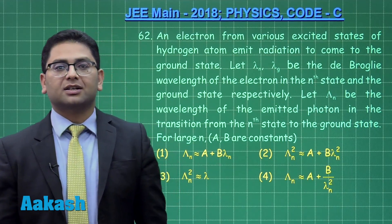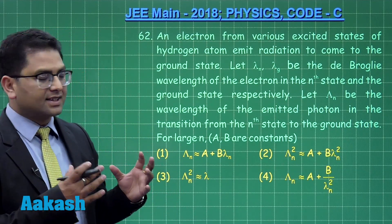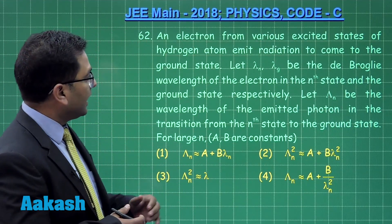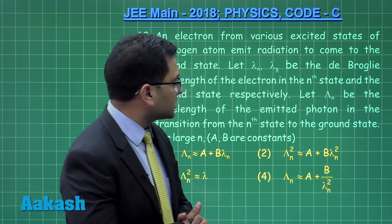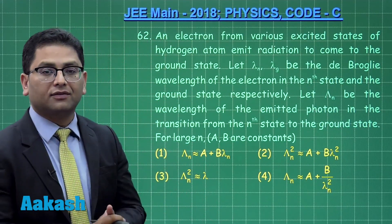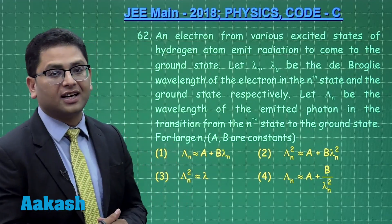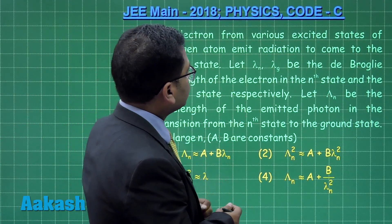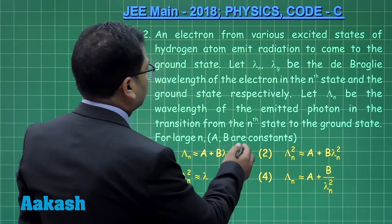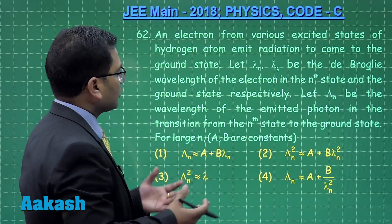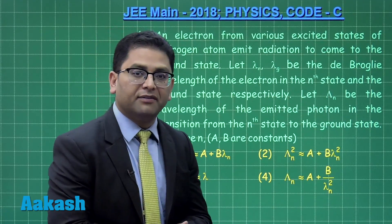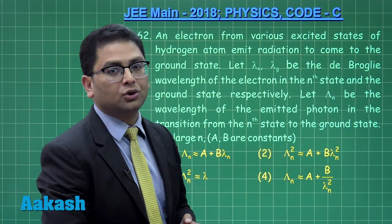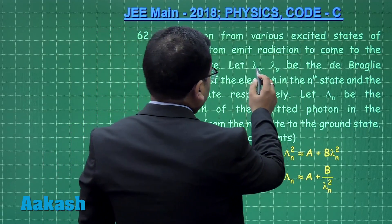Now let's go for question number 62. Question number 62 is a bit complicated in calculation — not much, just a slight amount — and this is a very wonderfully framed question where the concept of de Broglie wavelength as well as atomic transition is included. An electron from various excited states of hydrogen atom emits radiation to come to the ground state. Whenever a transition takes place from excited to ground, quite obviously a photon would be emitted.